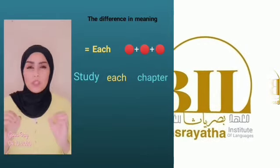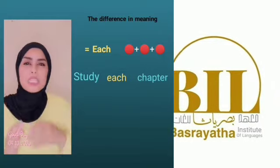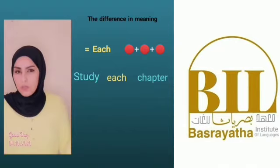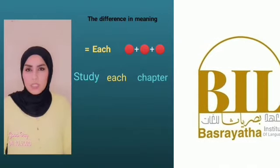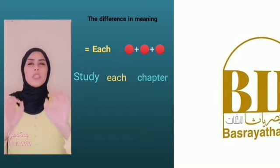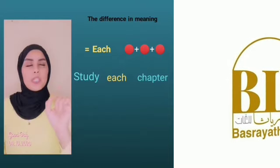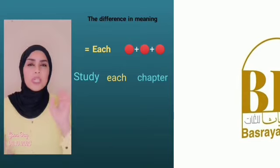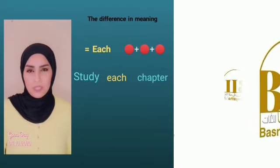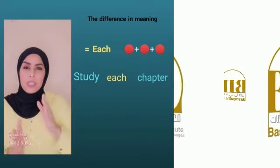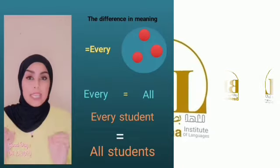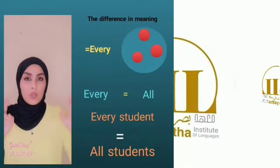We use 'each' when we think of things separately, one by one. For example, as a teacher before the final examination, you may say something like: 'Hey students, study each chapter carefully because the whole book is involved in my questions.' So 'each chapter' means one by one. Meanwhile, 'every' has the same meaning as the word 'all.'